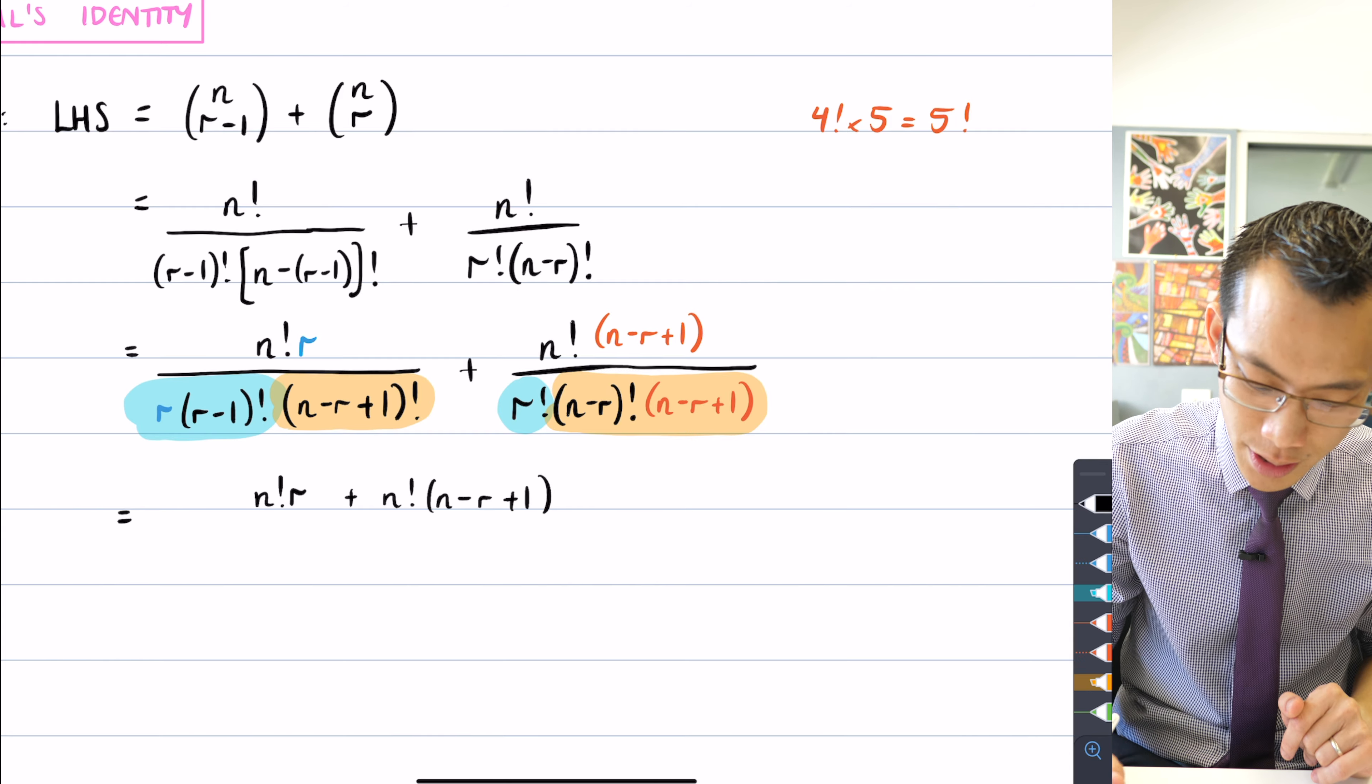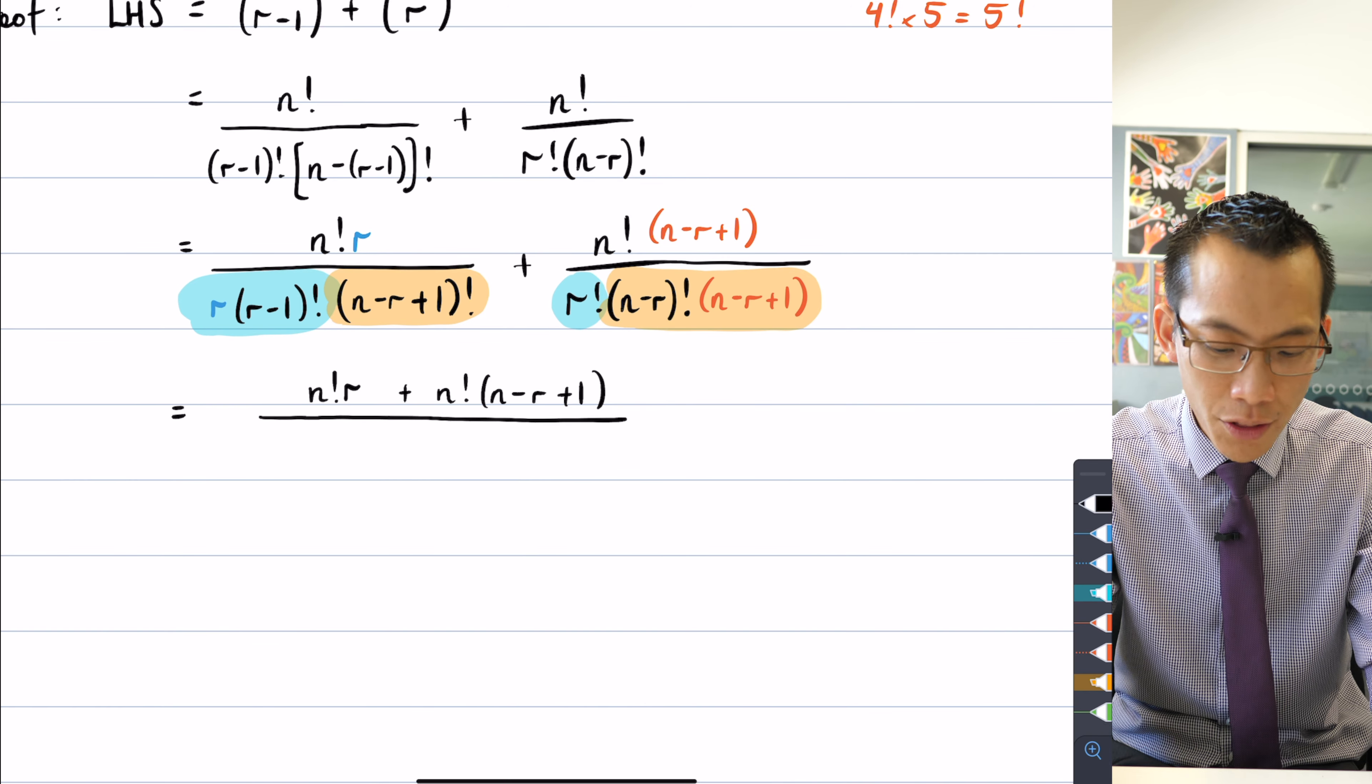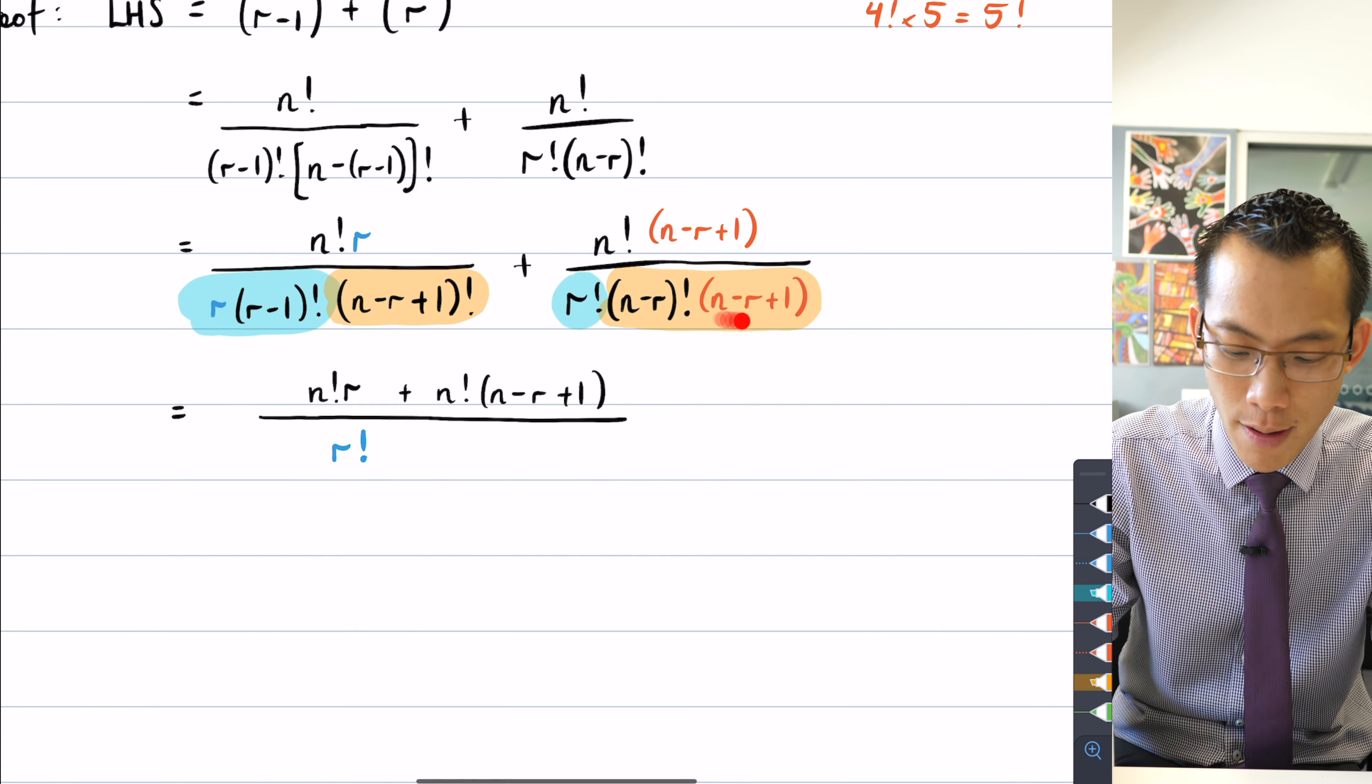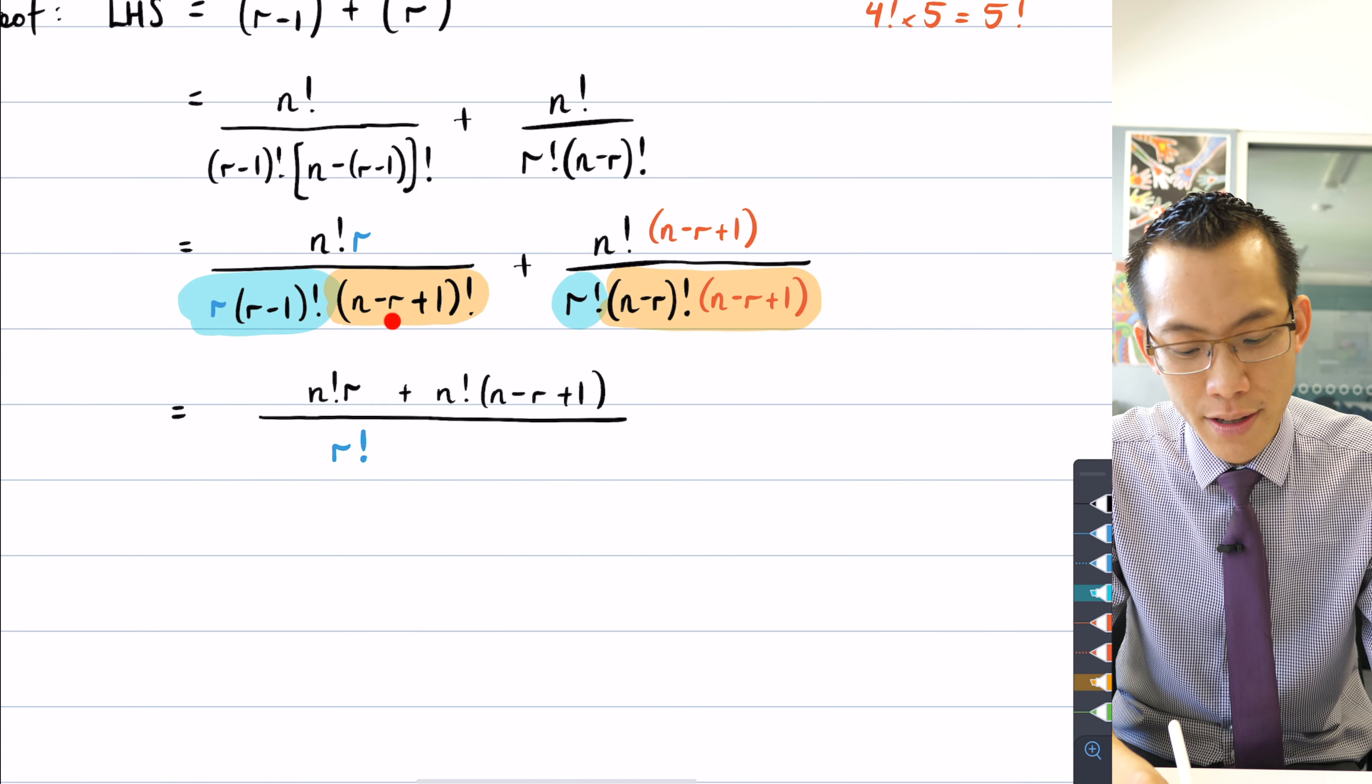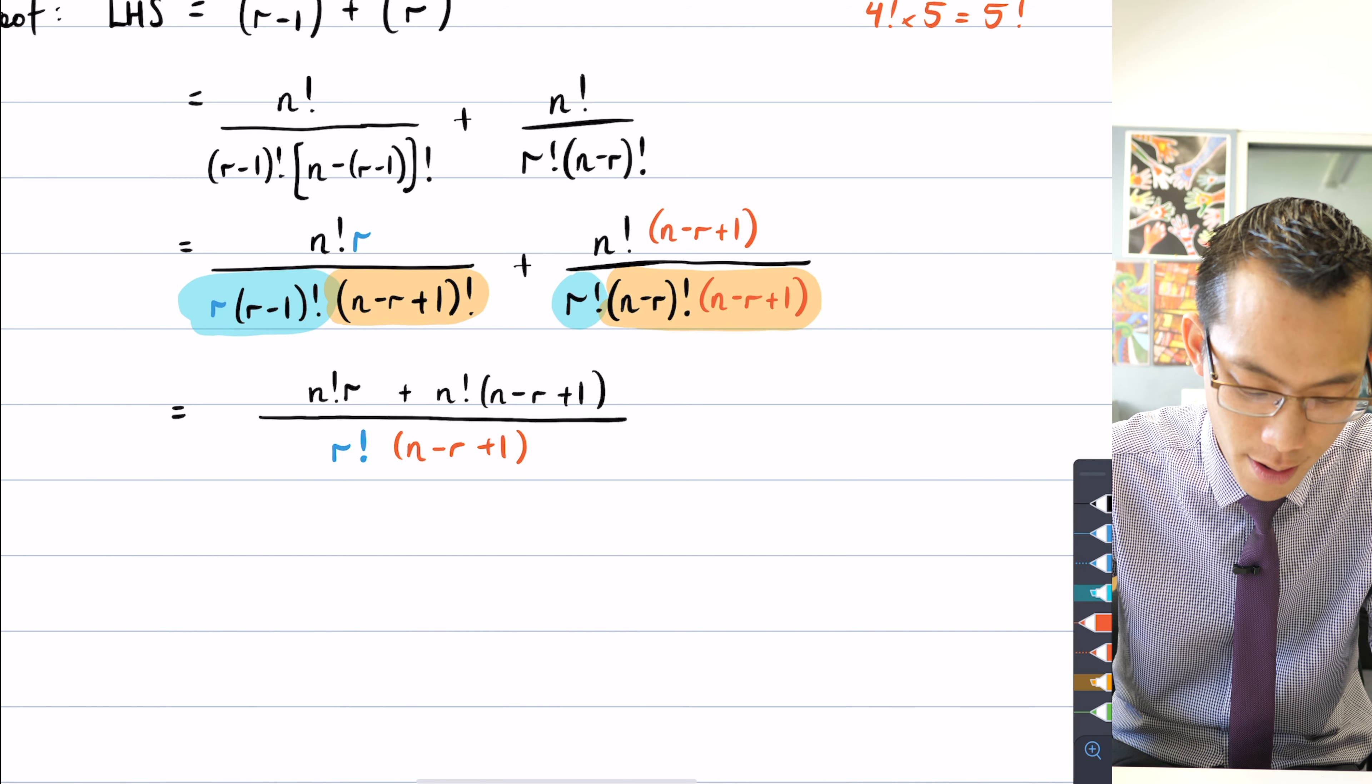and then what do I have on the denominator? Well the whole point of multiplying this side by r was to give me r factorial, so I'm just going to write that and I'll put it in blue so you can see where it came from, and then the whole point in multiplying this by n minus r plus one is to turn it into n minus r plus one factorial. So I'll also write that in orange so you can see n minus r plus one factorial.